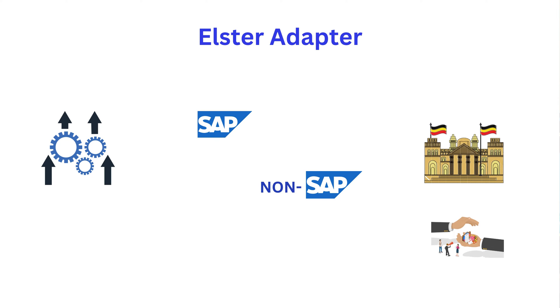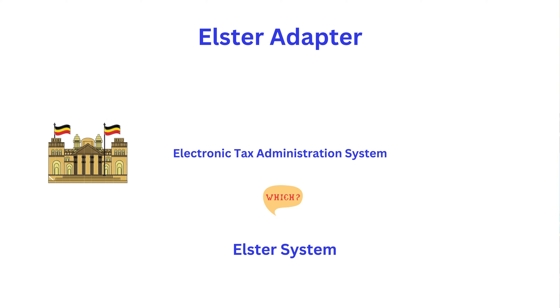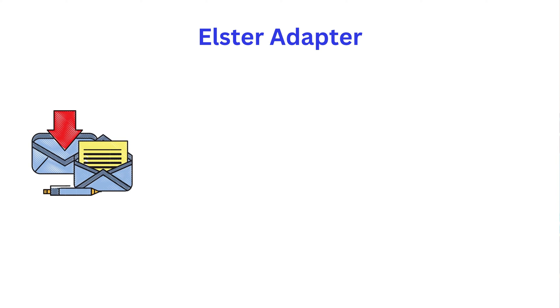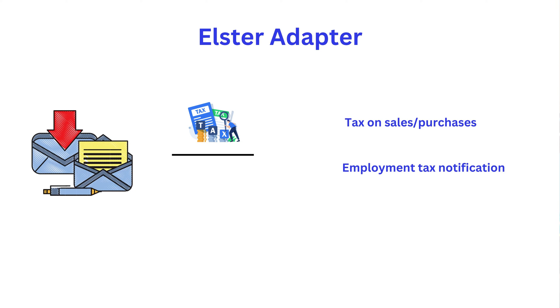German tax authorities have a system called the Electronic Tax Administration System, which is the Elster system. If you want to integrate your applications with this government body, you have to use the Elster adapter. This adapter allows you to send and receive tax documentation such as tax on sales and purchases and employment tax. This adapter uses a library called the ERIC library, which is provided by the tax authorities.